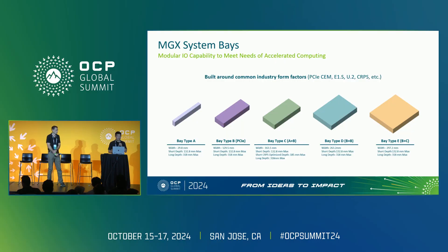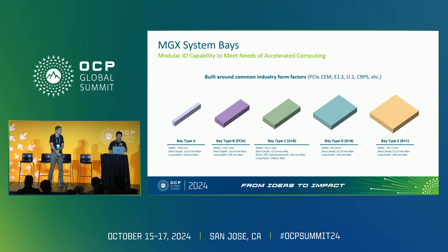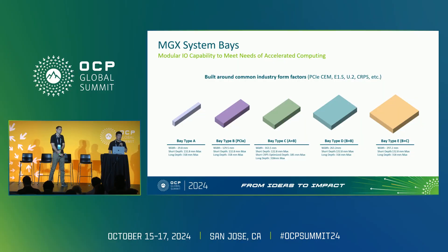Starting from the type B bay — basically a full height, full length PCIe card — placing three of those inside a 19-inch chassis leaves a little space that is type A. Type C is a combination of type A and B, and type D is another combination of earlier blocks as well as type B. There are two standard lengths currently called out in the spec: a short length of 133 millimeters, basically the length of a typical short storage device, and a longer bay — the length of a full length PCIe 12.3-inch card.